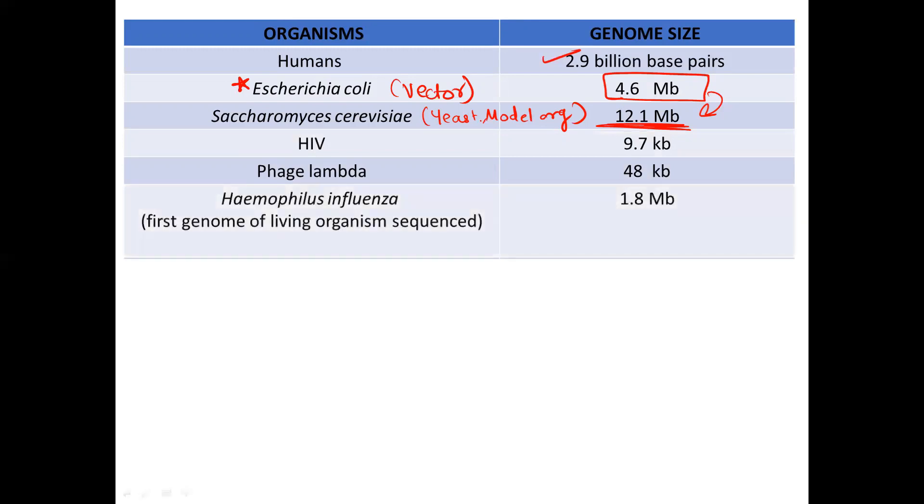Then very important question. The first genome of a living organism to be sequenced, it is Haemophilus influenza. The genome size is 1.8 MB. Very very important.